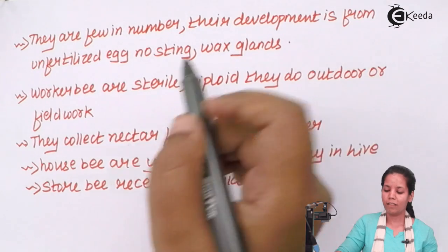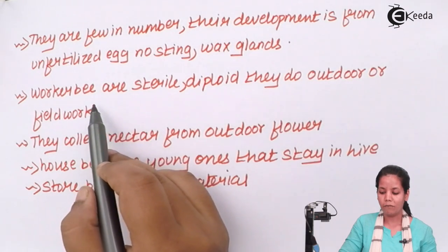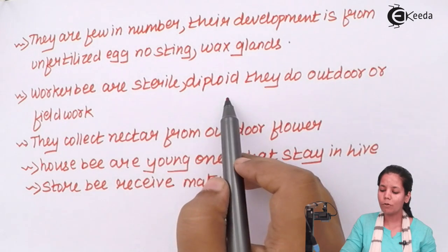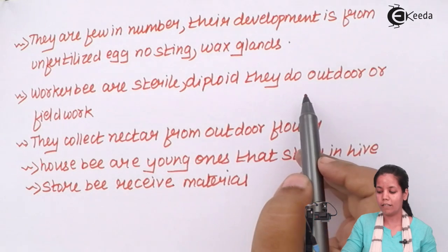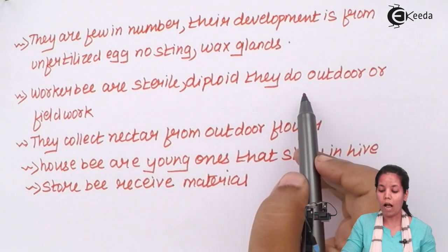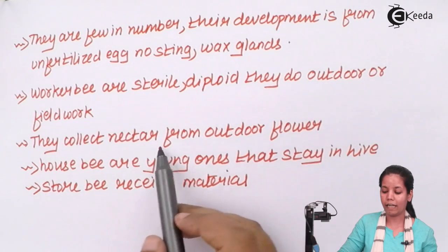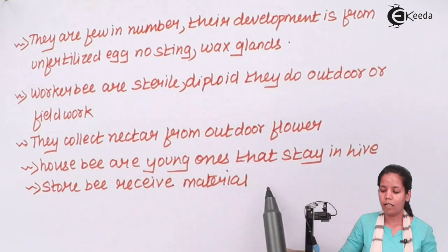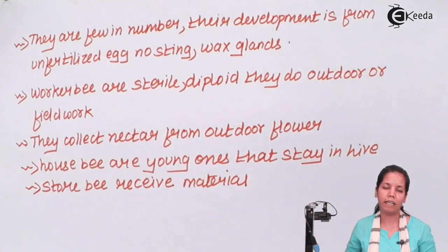The worker honeybee — the name suggests it all. Worker honeybees cannot reproduce; they are sterile. They are diploid in number and have a full set of chromosomes. They do outdoor or field work, meaning they collect nectar from outdoor flowers. The young ones stay in the hive and store bees receive material.